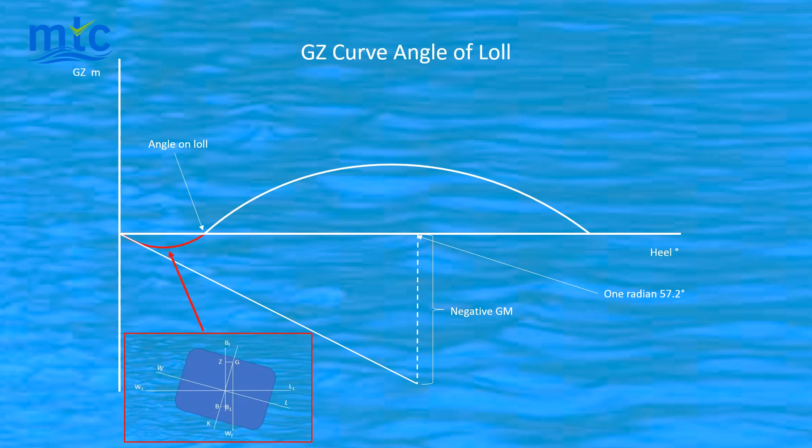Initially, the vessel has a negative GM, as the first part of the curve, shown in red, is below the horizontal axis and forms a capsizing lever, as shown in the diagram outlined in red.